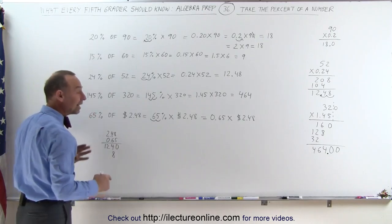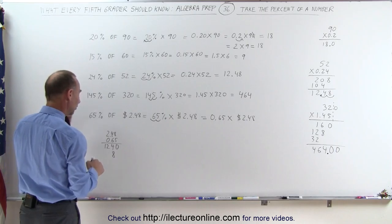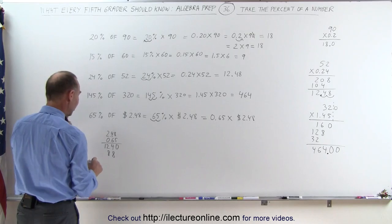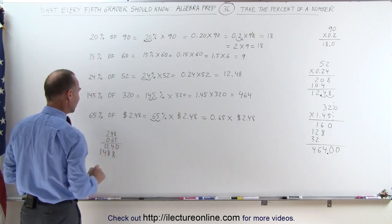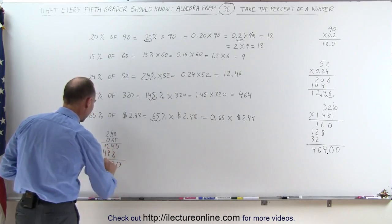6 times 4 is 24 plus 4 is 28, write down the 8, remember 2. 6 times 2 is 12 plus 2 is 14. Add those all together: 0, 2, 1, that's 1, 1, 6, and 1.